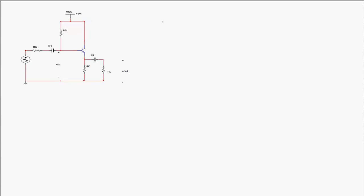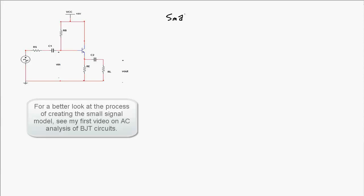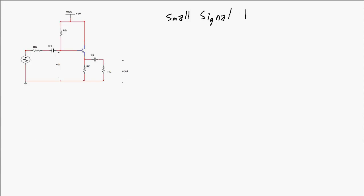The next step is AC analysis, which involves finding the small signal model — also known as the AC model — of this amplifier. To build it: first, short the DC voltage sources so VCC connects to ground; second, short all capacitors; third, substitute the BJT AC model in for the transistor schematic symbol, and redraw the circuit.